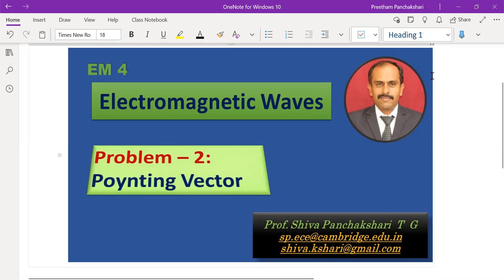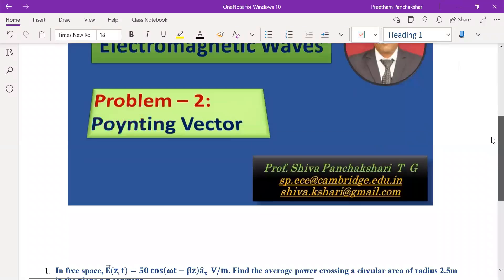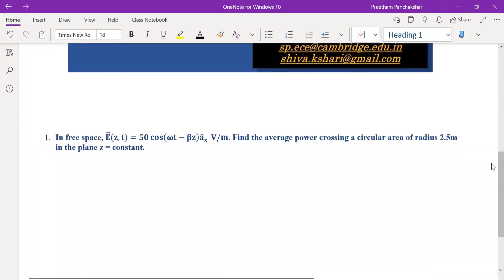Here we shall understand how to find the power passing through a given area using the Poynting vector. In this numerical, the electric field is given in terms of intensity in free space.